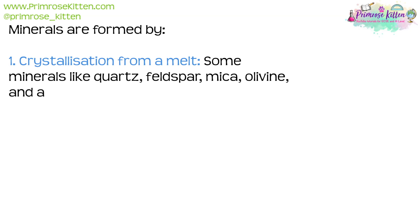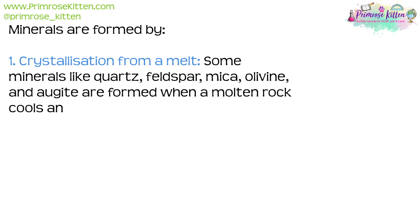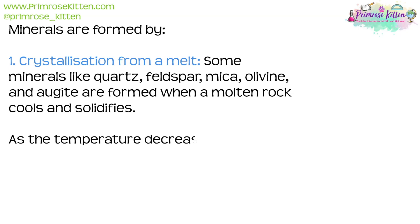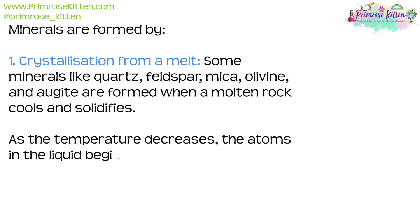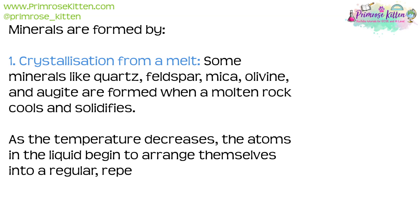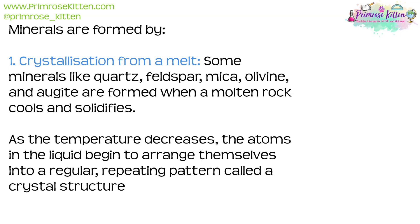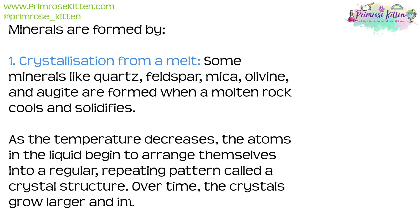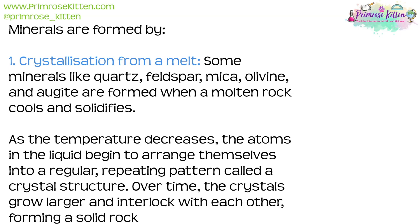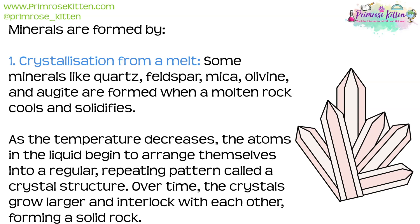Some minerals like quartz, feldspar, mica, olivine and augite are formed when a molten rock cools and solidifies. As the temperature decreases, the atoms in the liquid begin to arrange themselves into a regular repeating pattern called a crystal structure. Over time the crystals grow larger and interlock with each other, forming a solid rock.